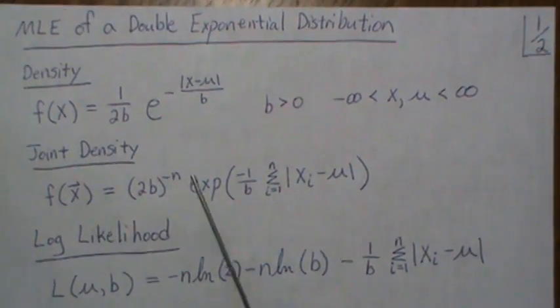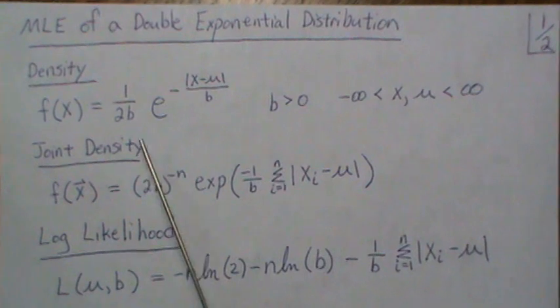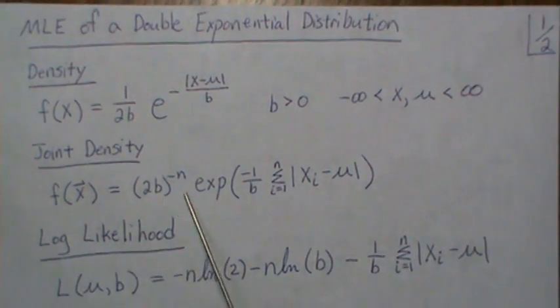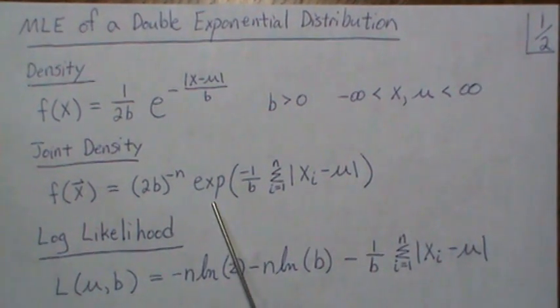And since each xi are independent, then we just multiply them together. So that's why if you take this up we get 2b to the minus n, and then you end up summing the exponents of this exponential.